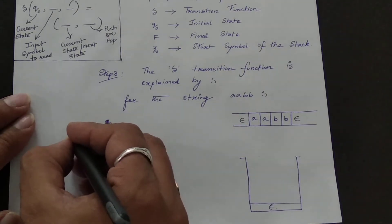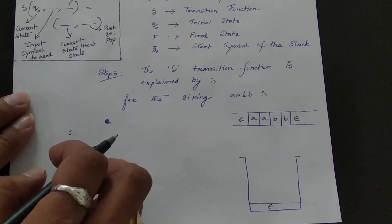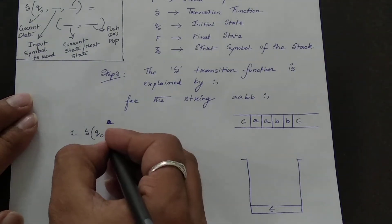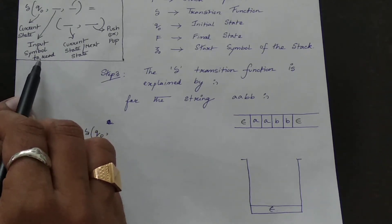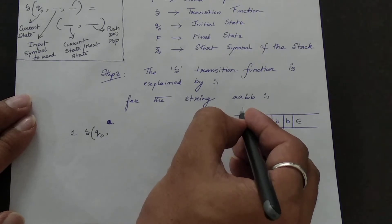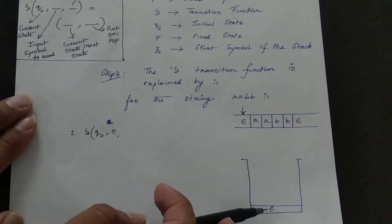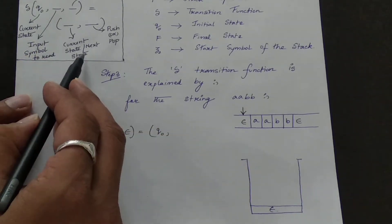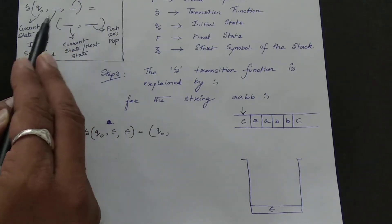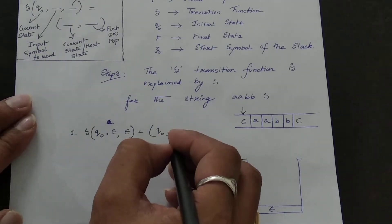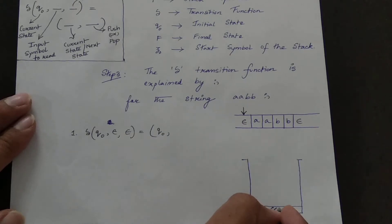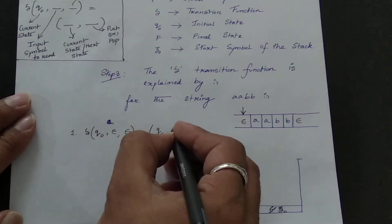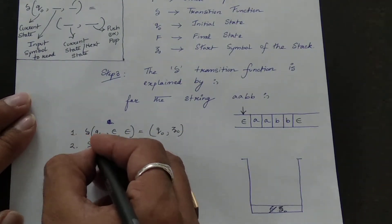This first step is a universal step you can use in any equation. Delta(q0, ε, ε) = (q0, Z0): starting at initial state q0, with both the input symbol and top of stack being epsilon, the state remains q0 and we push Z0 — the start symbol of the stack — as the first element.